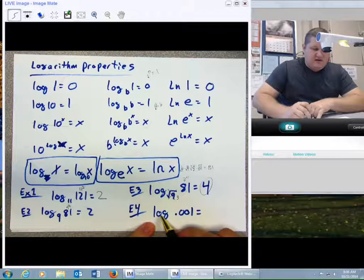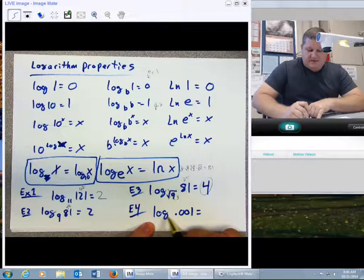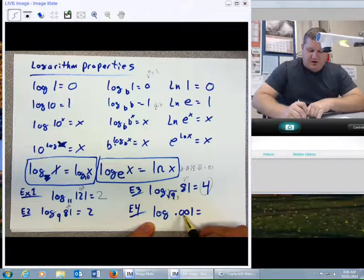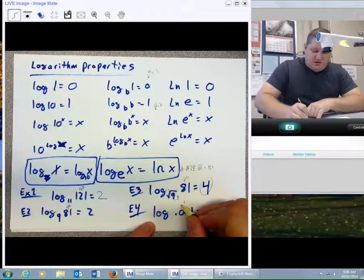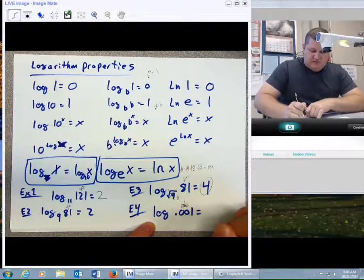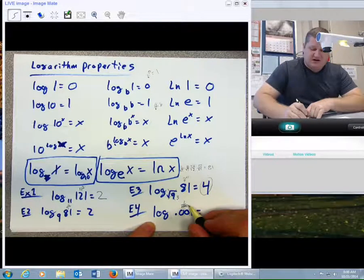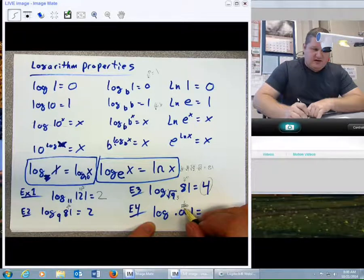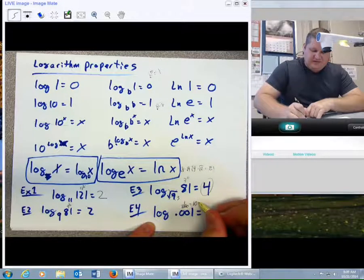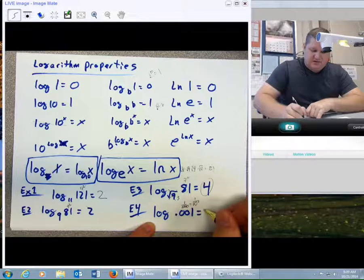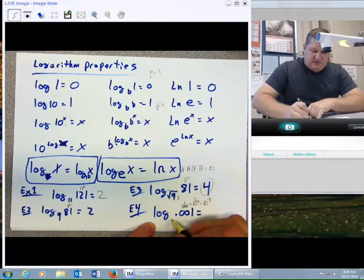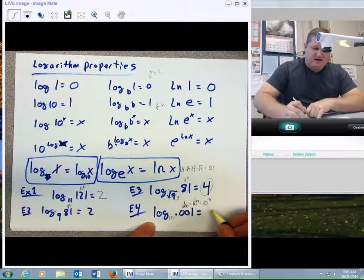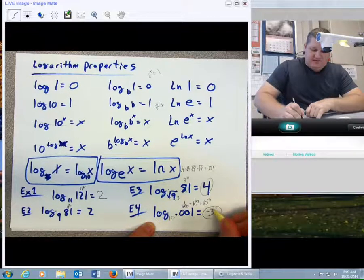This is a very common one. Log base 10 of .001. That is 1 over 1,000. So, we change that decimal to a fraction. How do I get 1,000? That's the same thing as 10 to the 3rd, 1 over 10 to the 3rd, or 10 to the negative 3rd. So, how many 10s does it take to make 10 to the negative 3rd? Negative 3 is your answer.